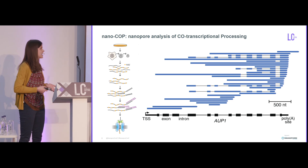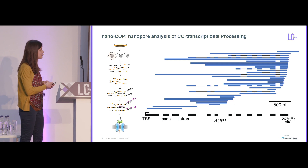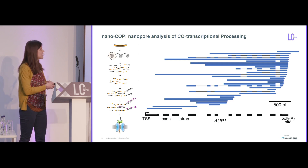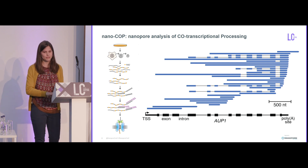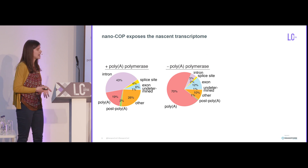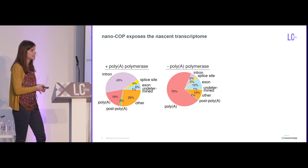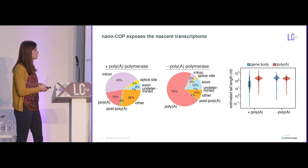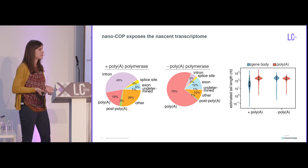Here are some example NanoCOP reads aligning to the AUP1 gene in human K562 cells. We get reads that end within the middle of the gene — these are reads we think are coming from RNAs that are still being transcribed. We also get really interesting combinations of splicing: some reads have every intron spliced, some have no splicing, and some have interesting combinations that tell us about the order and patterning of RNA splicing. To confirm we're looking at nascent RNA, a pie chart shows that when we add poly-A polymerase, most three-prime ends align within the gene body, but without poly-A polymerase, most end at poly-A sites. We also used Nanopolish to look at poly-A tail lengths and can distinguish artificial tails from endogenous tails by their length.